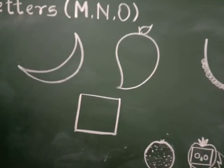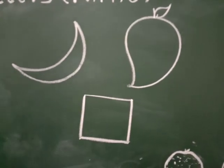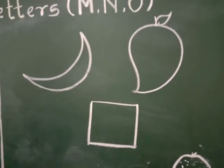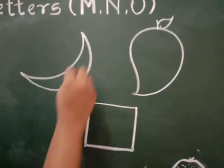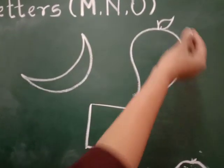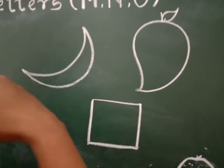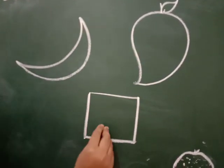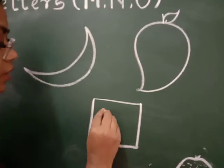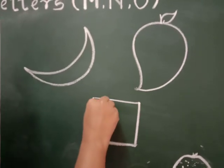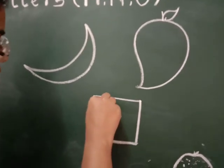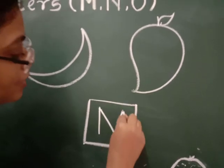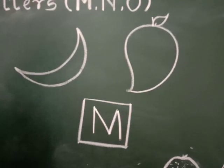So say after me: M for M. Students, M for — see here, what is this? Moon. And the king of fruit is mango. It starts with letter M. So how can we write M? Upside standing, downside slanting, again upside and downside. Letter M.